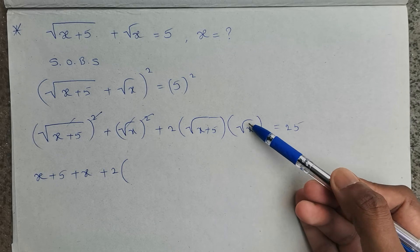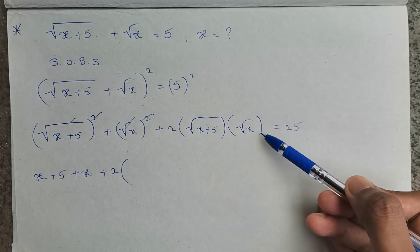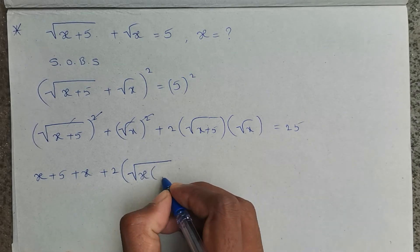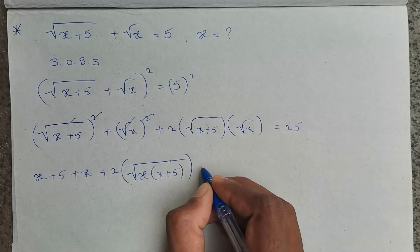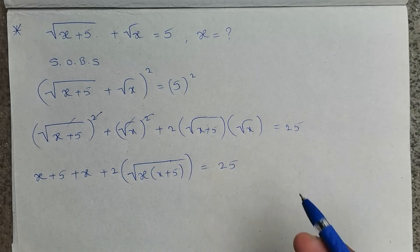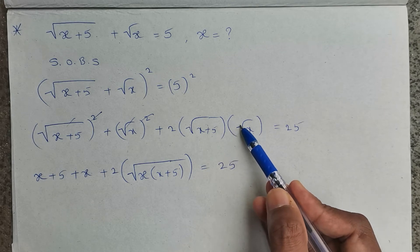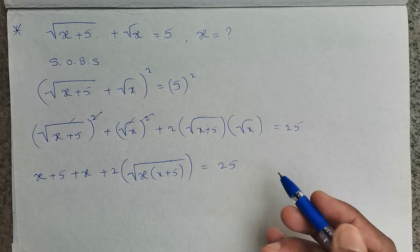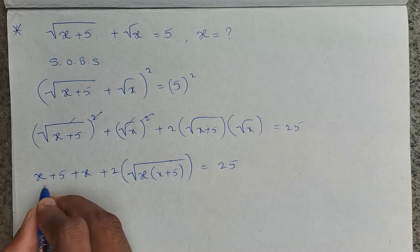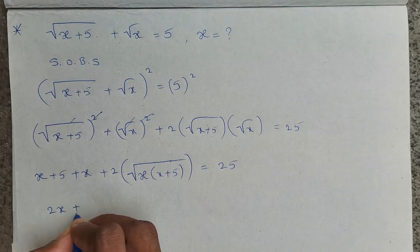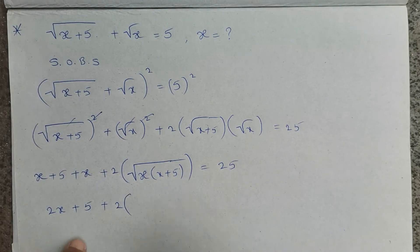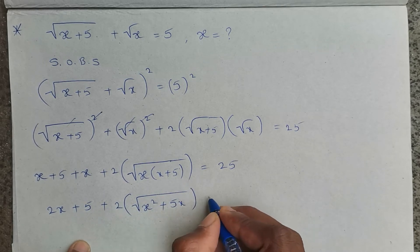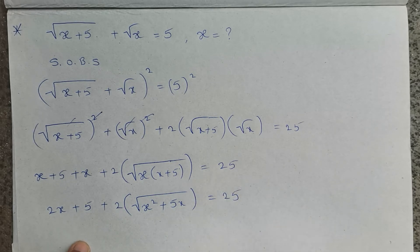The remaining term has square roots, so we can multiply the radicands inside: 2 times root of x(x+5). Since both are second-order roots we multiply to get root of x squared plus 5x. So the expression becomes 2x plus 5 plus 2 times root of x squared plus 5x equals 25.